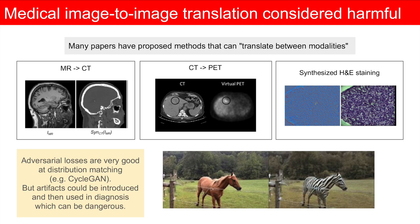These approaches are often using distribution matching with techniques such as CycleGAN, which provides compelling results. However, if the distributions are not representative, or the networks are not perfect, then these networks can hallucinate a target image, and depending on how they are deployed, can mislead a physician.